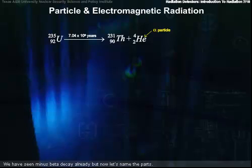We've seen beta-minus decay already, but now let's name the parts. Tritium, with a half-life of 12.33 years, decays to helium-3 plus an electron plus an anti-neutrino.